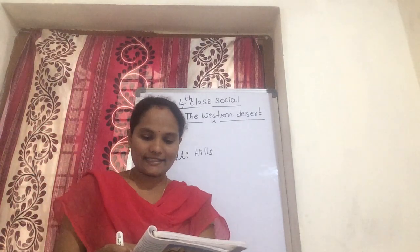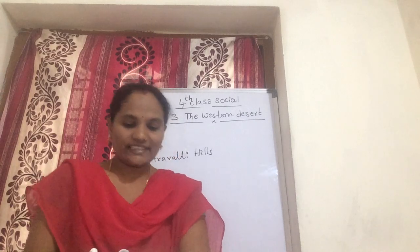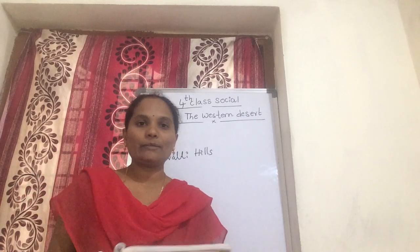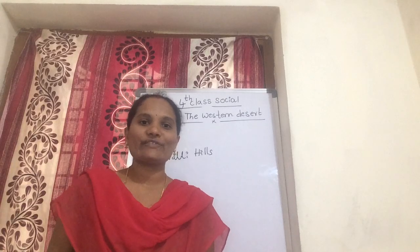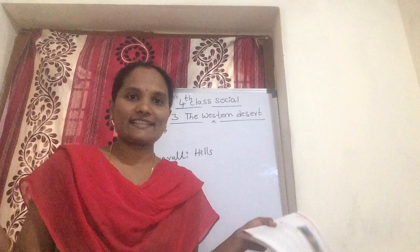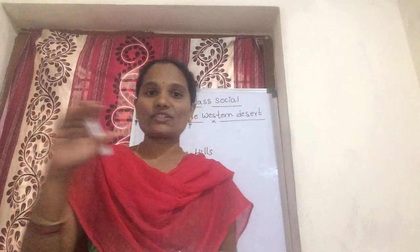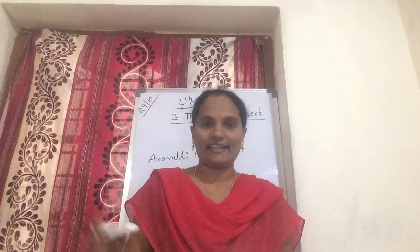The Western Desert is a big desert and the land is covered with sand. What is that? The Western Desert is a very big desert and is covered with sand. This area has hardly any vegetation and is called the Indian Desert or Tahira Desert.